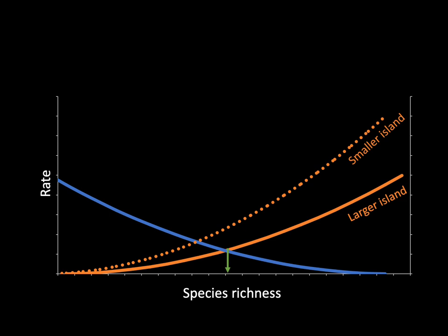How does island size link with colonization and extinction? Bigger islands are more likely to be colonized since they represent bigger targets for species to disperse to. They will also have lower extinction rates since species can have larger populations on bigger islands and therefore have lower probabilities of going extinct. As a result, when we compare a larger island to a smaller island, the intersection of the two curves occurs at a lower level of species richness, predicting that smaller islands will have a lower equilibrium species richness than larger islands.